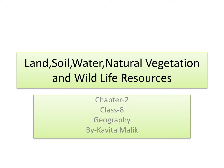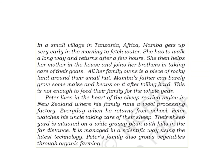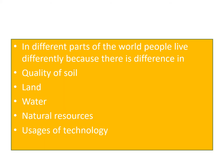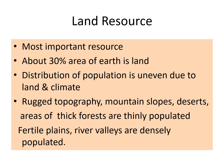Dear students, good morning. Today we are going to start Chapter 2 of Geography, that is Land, Soil, Water, Natural Vegetation and Wildlife Resources. The chapter begins with the story of two children, Mamba and Peter, living in different parts of the world. Through this story, we come to know that in different parts of the world, people live differently because there is difference in quality of soil, land, availability of water, natural resources and uses of technology.